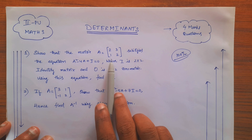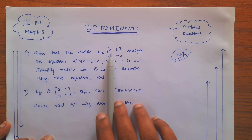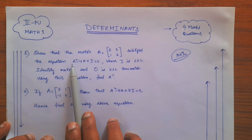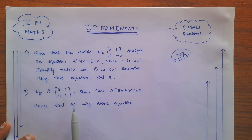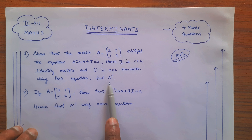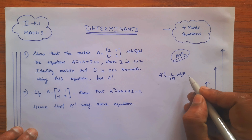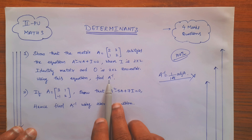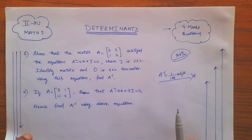For these questions, first they will give one 2×2 matrix. The question will say: show that the given matrix satisfies the equation A² minus 4A plus I equal to 0, where I is the 2×2 identity matrix and 0 is the 2×2 zero matrix. Using this equation, find A inverse. We need to find A inverse not by the standard formula, but by using the given equation. The method is the same across similar questions — only the values change.